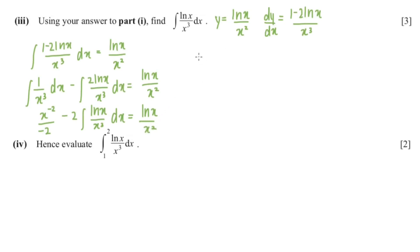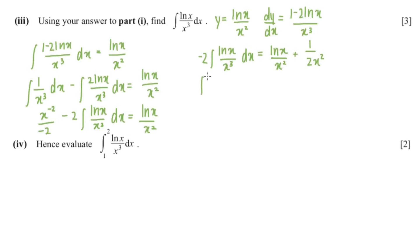Shifting terms to the other side gives: negative 2 times the integral of ln(x)/x cubed equals ln(x)/x squared plus 1/(2x squared). Bringing the negative 2 to the other side, the integral of ln(x)/x cubed equals ln(x)/x cubed plus 1/(2x squared), all over negative 2.